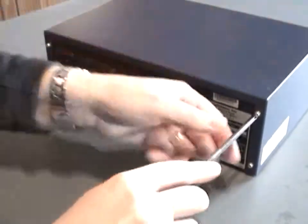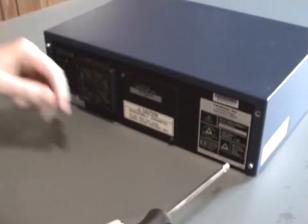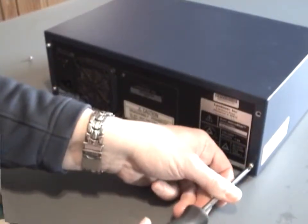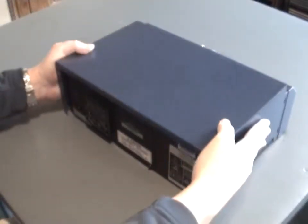Remove the four screws on the back of the unit. Remove the cover by pulling back then lifting up off of the MicroStar.